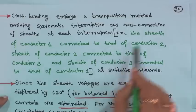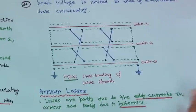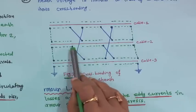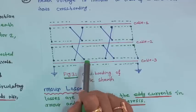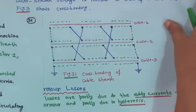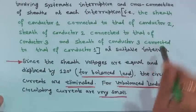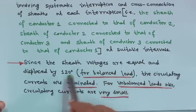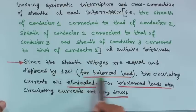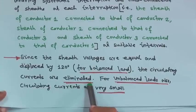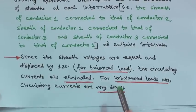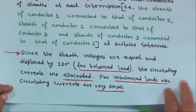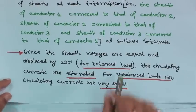The sheath of conductor 1 is connected to conductor 2's sheath, the sheath of conductor 2 is connected to conductor 3's sheath, and the sheath of conductor 3 is connected to conductor 1's sheath — at suitable intervals. This way circulating current can be minimized. Since the sheath voltages are equal and displaced by 120 degrees for balanced load, circulating currents are eliminated. For unbalanced load also, circulating currents are very small, particularly for 11 kV distribution cables.